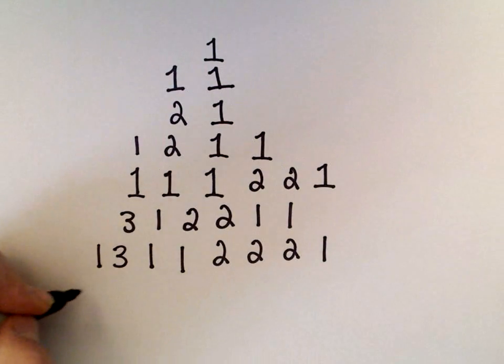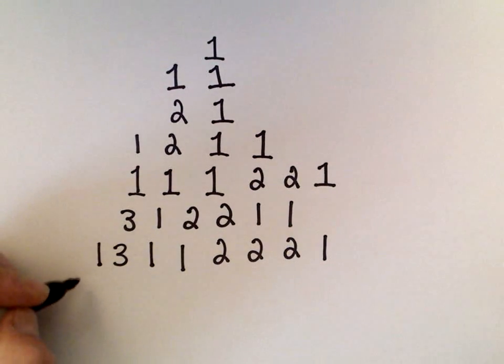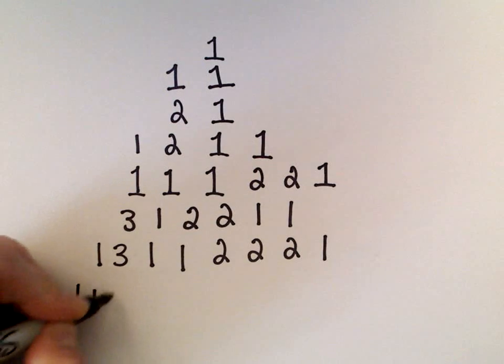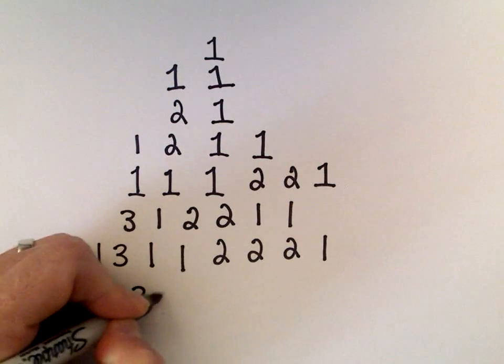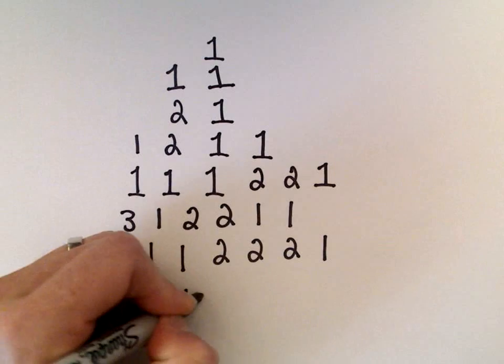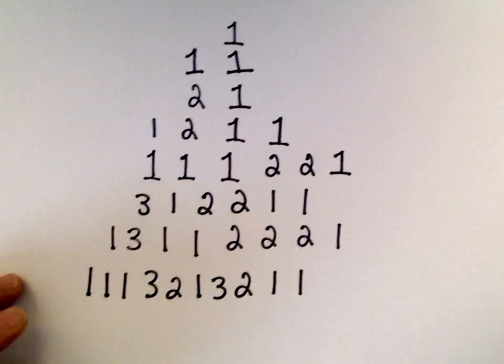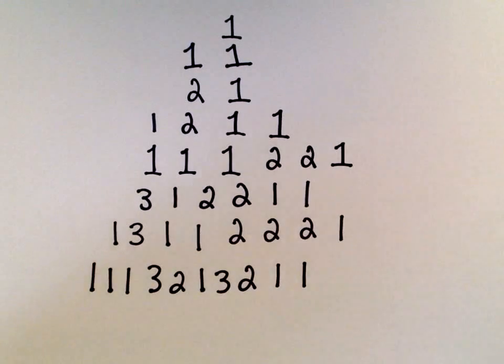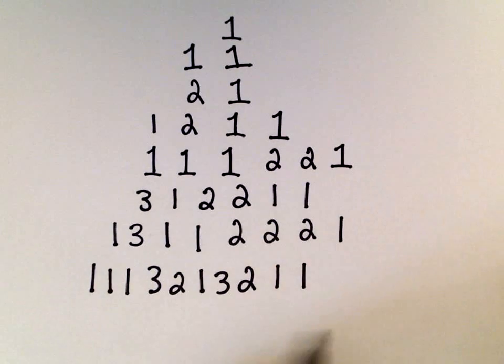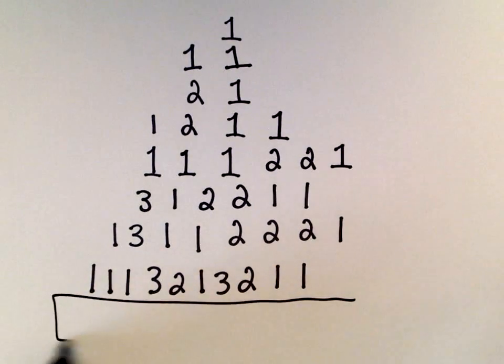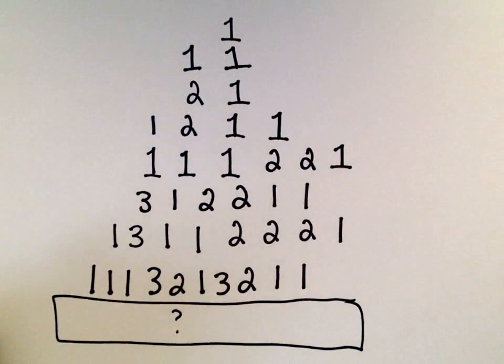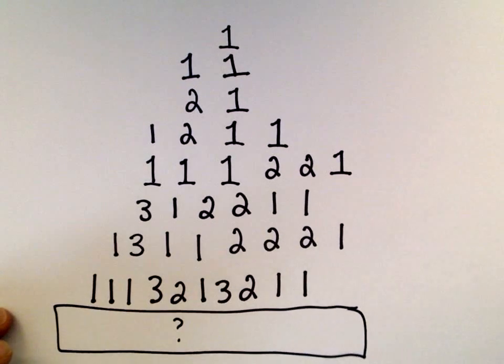And then the last row I'm going to write out here we have the numbers one one one three, two, one, three two one one. And now the question is what sequence of numbers goes next? What sequence of numbers comes next? That's the puzzle.